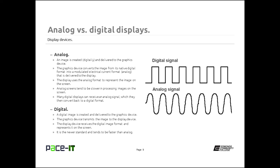Many digital displays can receive an analog signal, which they then convert back to the digital format. For example, if you're outputting through a VGA port on your PC, tablet, or laptop, that is an analog format. And if you're outputting that to an LCD display, which is a digital display, it takes that analog signal and converts it back to digital. Back in the early days when LCDs were first coming out, it was actually difficult to find a digital display that accepted digital input — almost all of them only accepted analog.